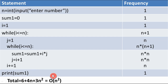Adding all frequencies gives 6 + 4n + 3n². In Big O notation, we look at the highest degree of n, which is n². So this program has quadratic time complexity O(n²). This is how you find the time complexity of any program — identify loops and non-loop statements, calculate frequency for each, sum them up, and take the highest degree of n.